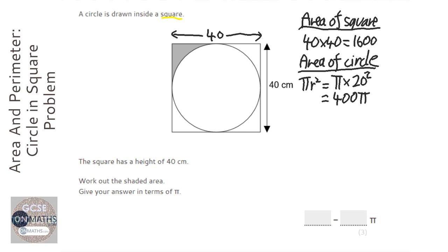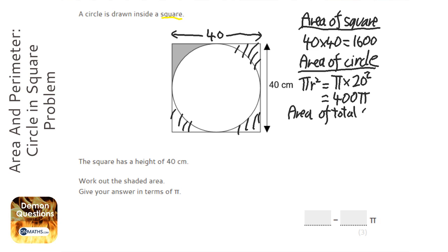So what we want to do is we want to work out the area of the total missing bits. So area of total space, I'll call it. And I've shaded it in so the examiner can kind of understand what I mean by total space. And that's just going to be the area of the square take away the area of the circle.